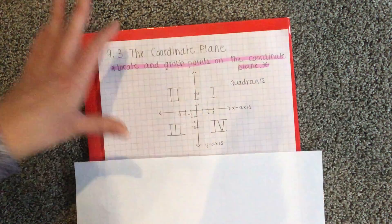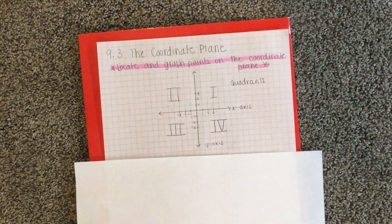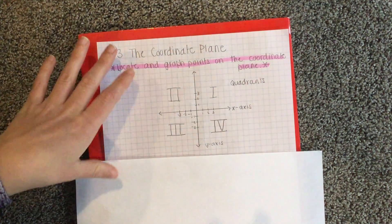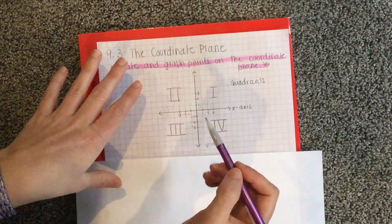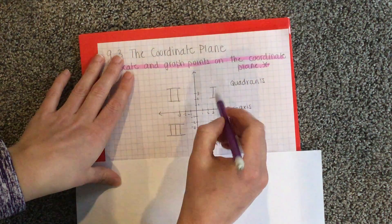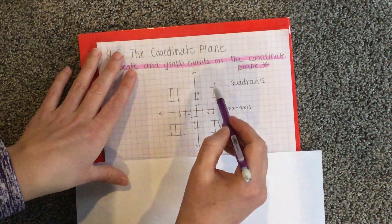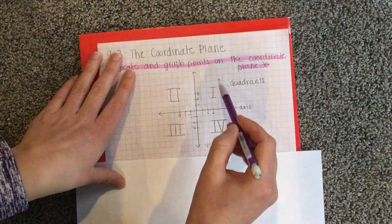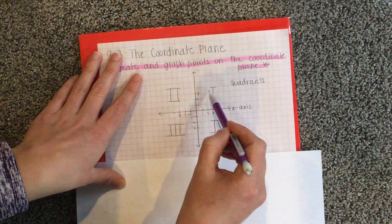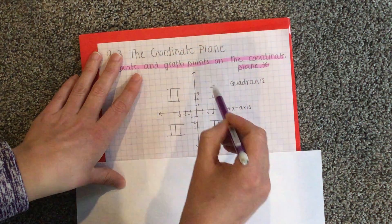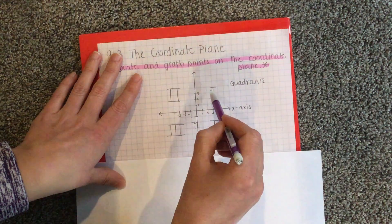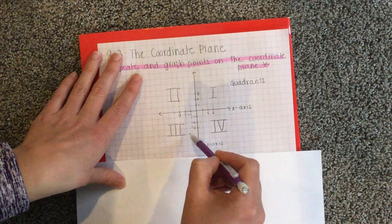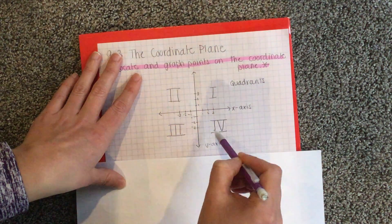It's important that you remember that quadrants need to be labeled in Roman numerals. Some people have a hard time remembering where the quadrants are. I like to tell students to imagine that you're drawing a C on the coordinate plane. Do you see that the quadrants go in order of the C? You start in quadrant one, and you move to quadrant two, to three, to four.